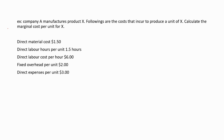Now let's do this example. Company A manufactures product X. Following are the costs that incur to produce a unit of X — calculate the marginal cost per unit for X. As you now know, under marginal costing we only consider the variable production costs. So what we have to do is identify whether these costs are variable production costs or not.